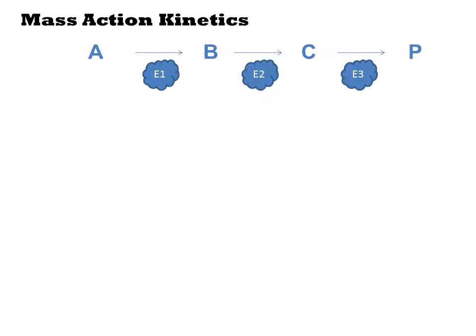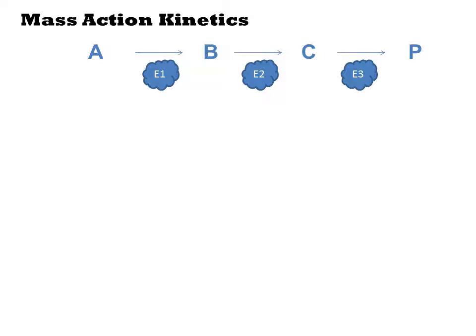Going from a single enzymatic reaction to a pathway only requires that we describe more species. For this three-enzyme system, we'd end up with ten equations. Each free substrate accounts for four species and four equations. Each free enzyme accounts for three equations in species, and there are three complexes to be described for another three equations.